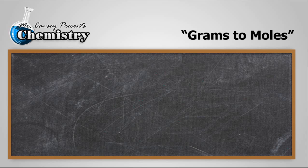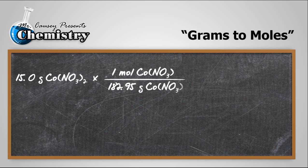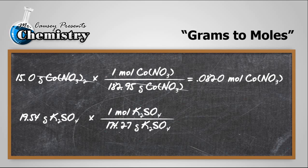Alright, let's change grams to moles. 15.0 grams of cobalt 2 nitrate divided by the molar mass of cobalt 2 nitrate will give us 0.0820 moles of cobalt 2 nitrate. Now, 19.54 grams of potassium sulfate divided by the molar mass of potassium sulfate will give us 0.1121 moles of potassium sulfate.